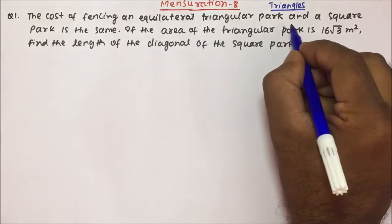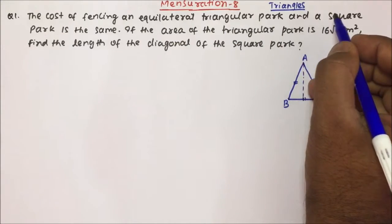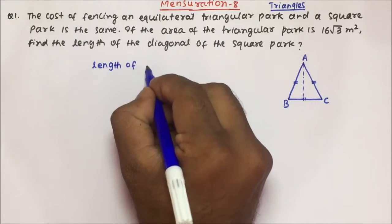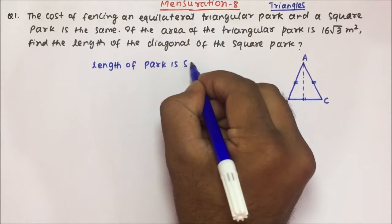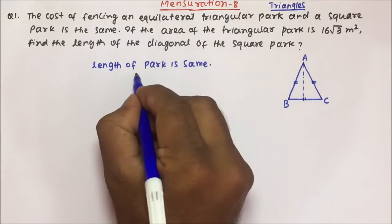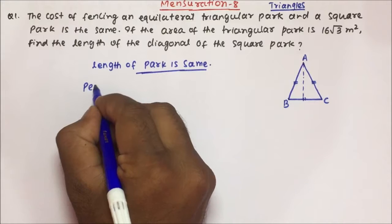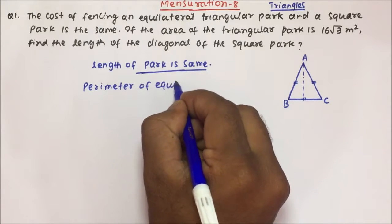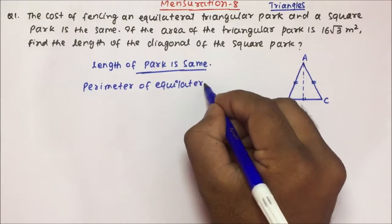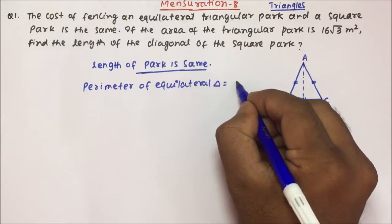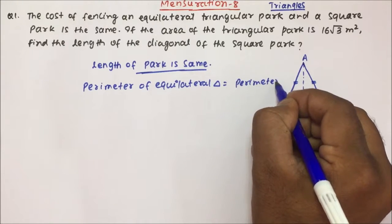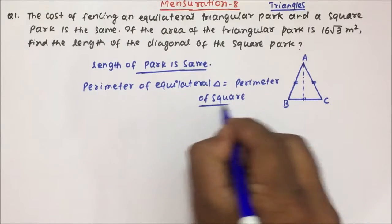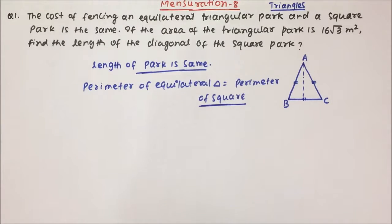The cost of fencing an equilateral triangular park and a square park is the same. That means the length of the park is same, and that is the only reason the cost of fencing is also same. So I can say the perimeter of the equilateral triangle will be equal to the perimeter of the square, because they are telling the fencing amount is the same.